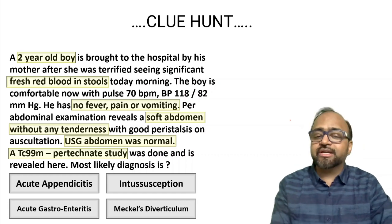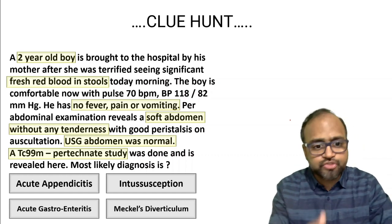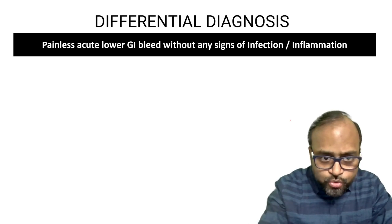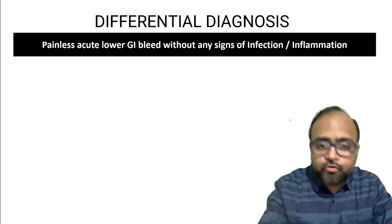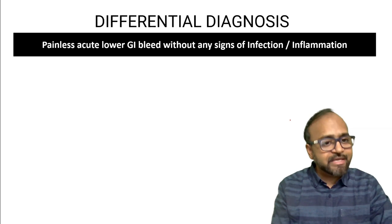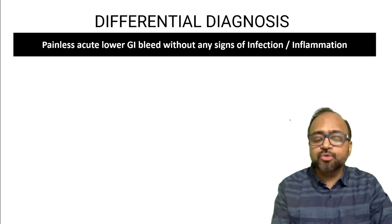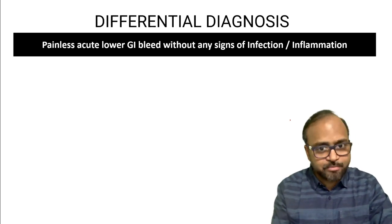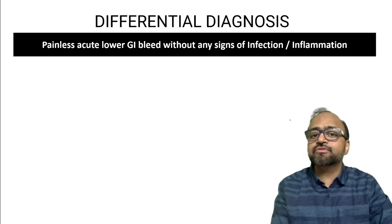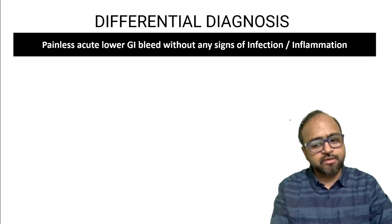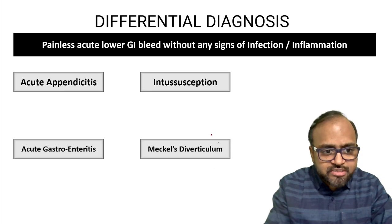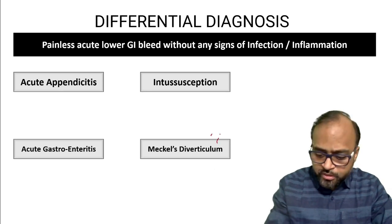Acute gastroenteritis should present with loose motions and vomiting — there was nothing of this sort here. So what we are looking at is a case of painless acute lower GI bleed, fresh blood in stools, without any signs of infection or inflammation.